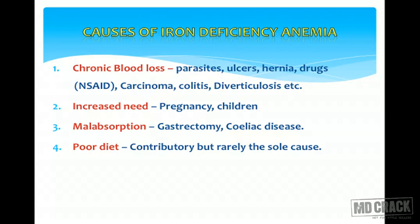Other causes include chronic blood loss, like parasites — hookworm infestations common in developing countries — ulcers, peptic ulcers, hiatal hernia, drugs like NSAIDs, carcinoma especially carcinoma of the cecum, ulcerative colitis, and diverticulosis. Carcinoma of the cecum is a very important cause of chronic blood loss iron deficiency anemia and must be kept in mind.